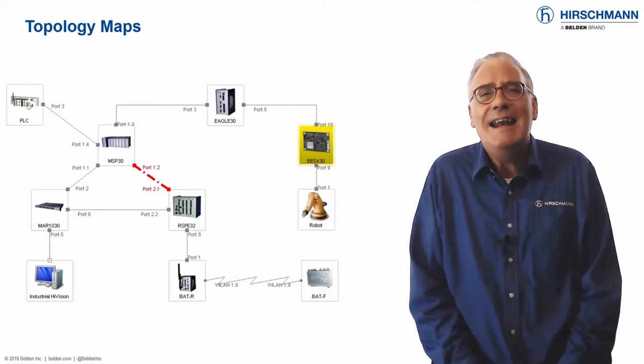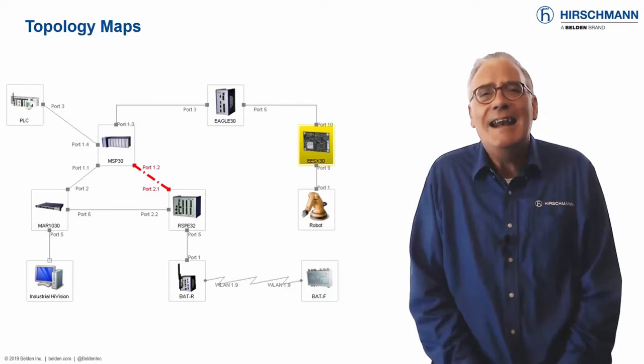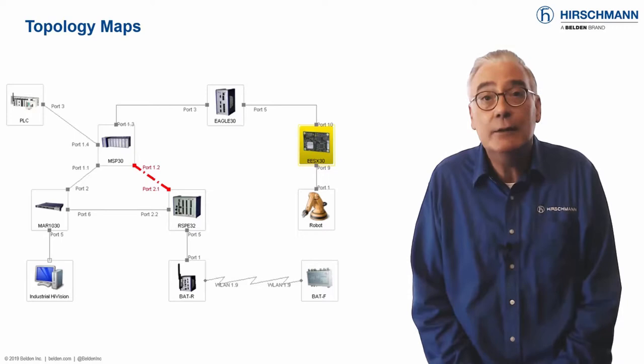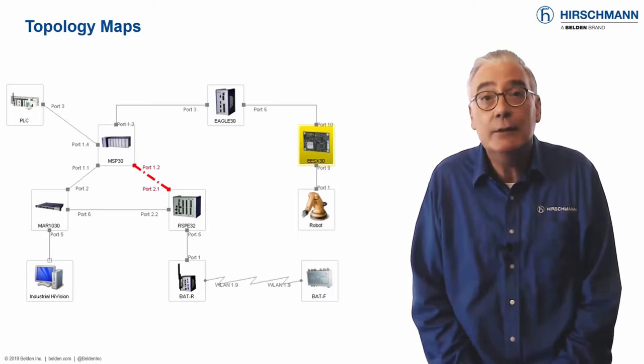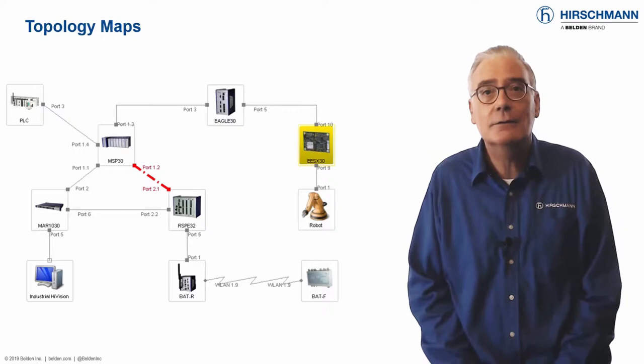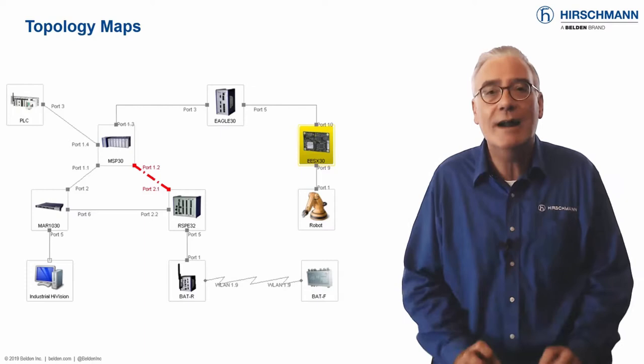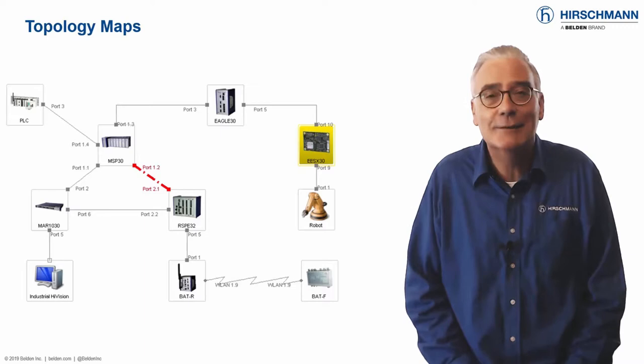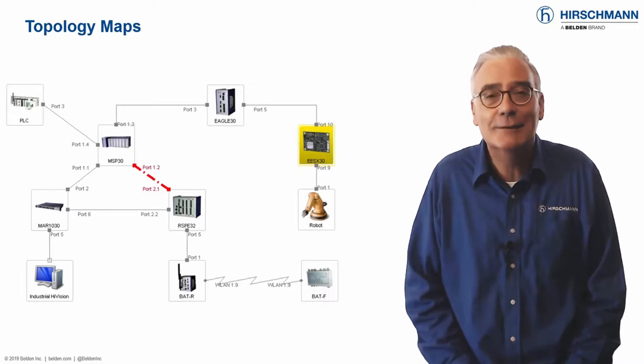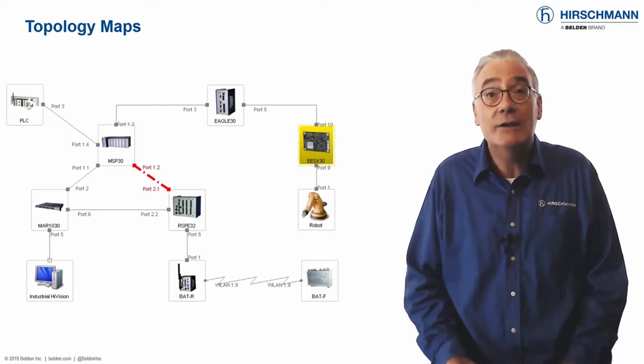A clear network topology map is one of the most important network management tools you can have. Within the map, each device is shown with a real picture, so you know exactly what kind of device you are looking at. Double-clicking allows you to drill down into a device for more granular information. Connections show the port numbers at each end of the link, so you always know where the cables are connected. The zigzag lines represent wireless connections, and dotted lines are redundant links, so you can see precisely where your data is flowing.